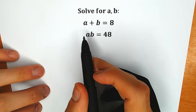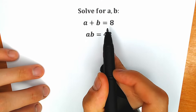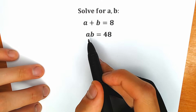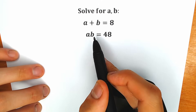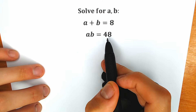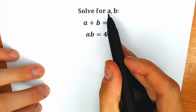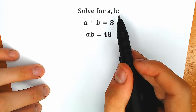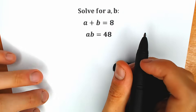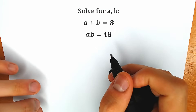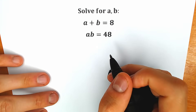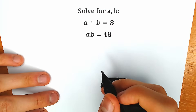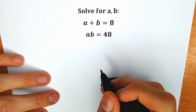Today we have a very interesting question: a plus b equals 8, and a product a times b equals 48. We need to solve this question for a and b. If you have your solution you can write it in the comments below and then we will check your answers.